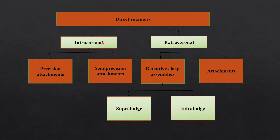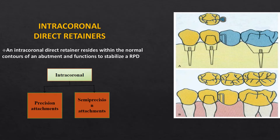Precision attachments can be incorporated within the contour of the abutment tooth by placing crowns, with one part of the precision attachment attached to the abutment tooth. Extra-coronal attachments are regular conventional clasp assemblies. Depending on how the retentive arm or retentive terminal approaches the undercut, they are further categorized into supra-bulge and infra-bulge types of direct retainers.